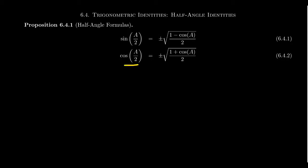Similarly, cosine of a over 2 equals plus or minus the square root of 1 plus cosine of a, over 2. The half-angle identities for sine and cosine are almost identical — plus or minus the square root of 1 plus or minus cosine of a over 2. The only difference is the sign in front of cosine: cosine has a plus, and sine has a minus. This follows the mnemonic that cosine gets along with cosine, but cosine and sine butt heads a little bit.